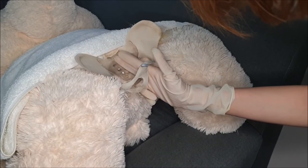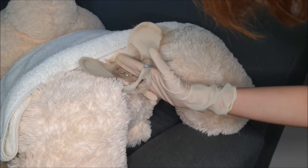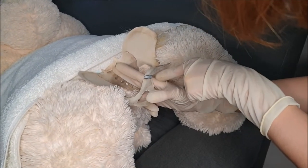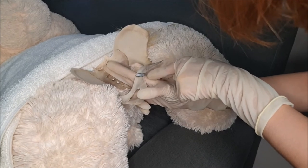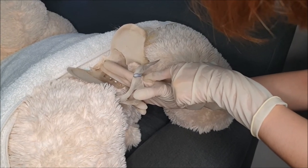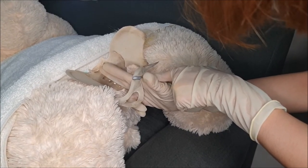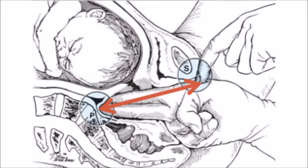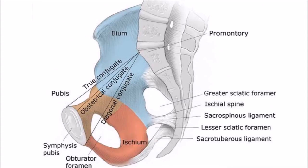The tip of the middle finger is then directed towards the sacral promontory. The examining hand is then elevated until it contacts the pubic arc, and this point is marked with the index finger of the opposite hand. Measure the distance between the tip of the middle finger to the mark on the index finger as the diagonal conjugate. The obstetrical conjugate is the shortest distance between the sacral promontory and the symphysis pubis.